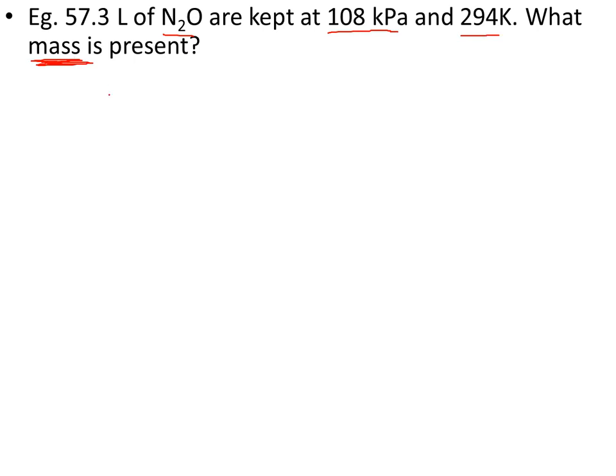Now if we want mass, that equation, the ideal gas law doesn't have mass in it, but it has moles in it. So if we find moles, we can then use the molar mass to go to mass. To find moles, we're going to take our equation, PV equals nRT. We're going to rearrange for number of moles.